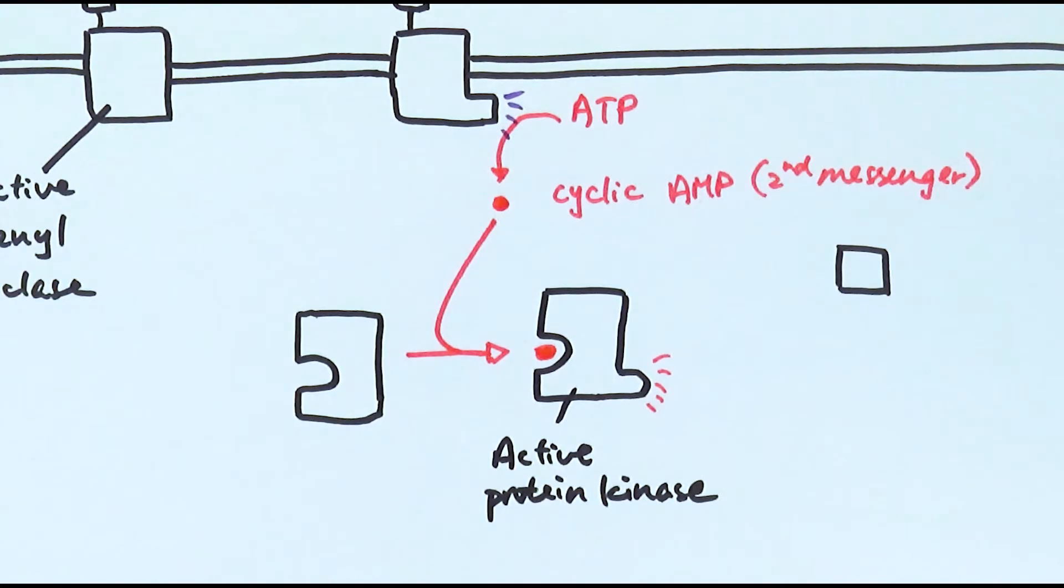Protein kinases are a family of proteins or enzymes that can do a very specific job. Protein kinases are enzymes that can phosphorylate other proteins or other enzymes to activate them. The method of activation is by adding a phosphate group to them.